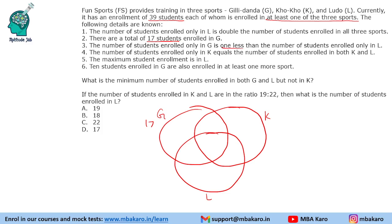Then some more students relation, one less equals maximum. Look at the last condition. It says 10 students enrolled in G are also enrolled in at least one sports. So there are total 17 in G. It says that the sum of these three values is 10, so only G is going to be 7. So from these two we get this information.